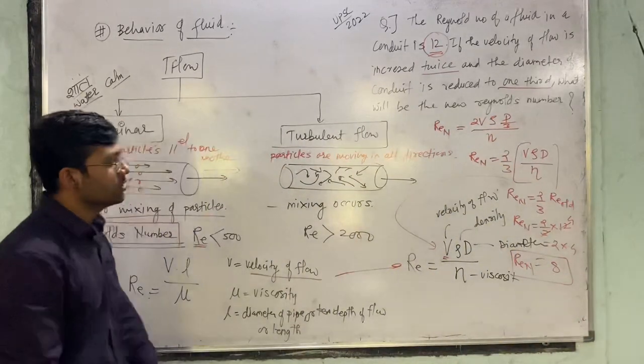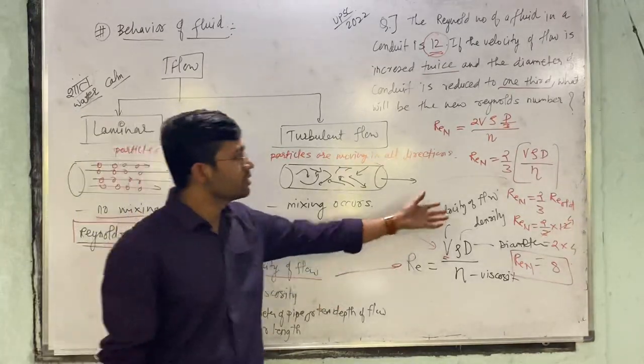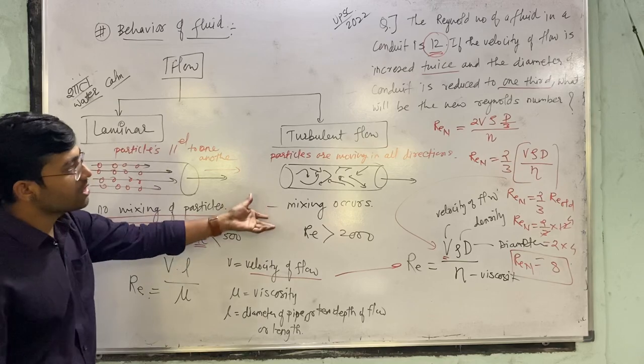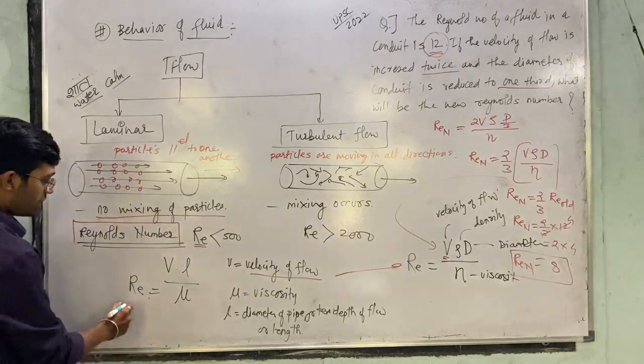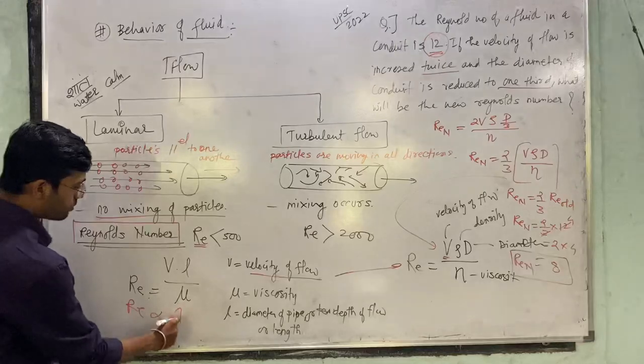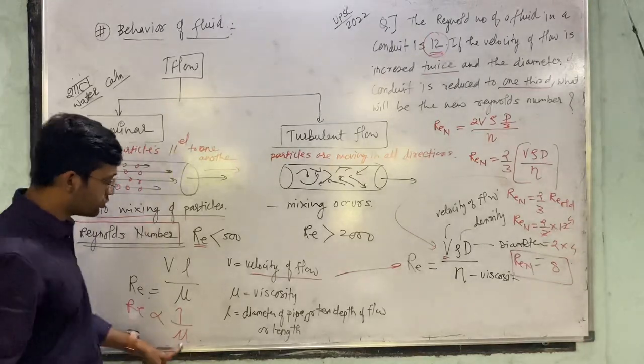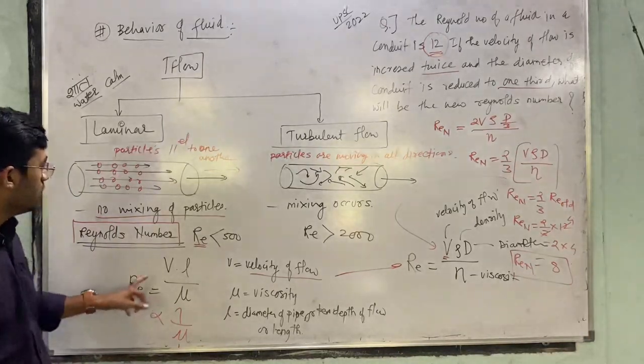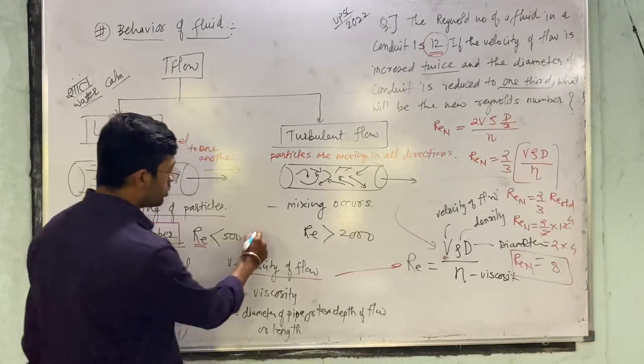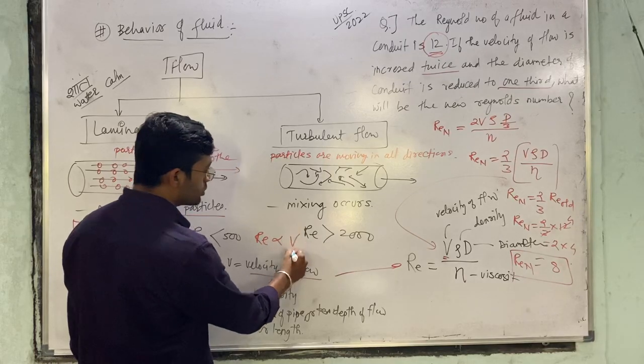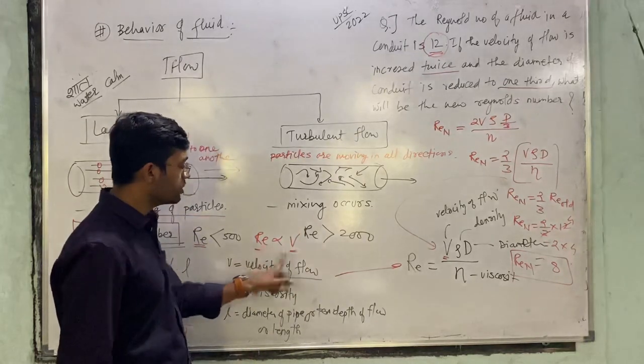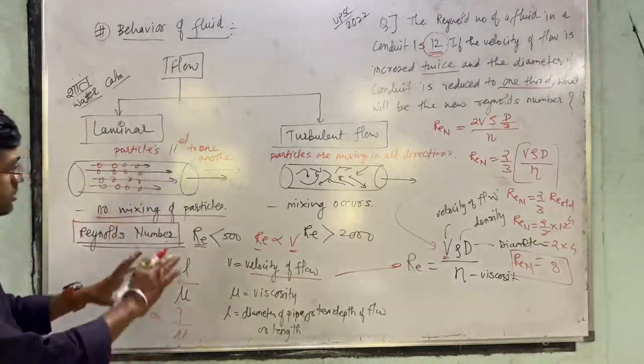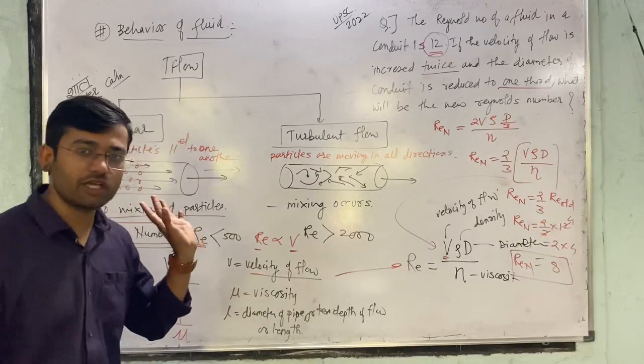Like that, you can use this formula. Reynolds number is inversely proportional to viscosity. If viscosity increases, Reynolds number decreases. Reynolds number is directly proportional to velocity. If velocity doubles, Reynolds number doubles. If velocity is halved, Reynolds number is halved. These are some types of questions you might expect in your exam. Thank you.